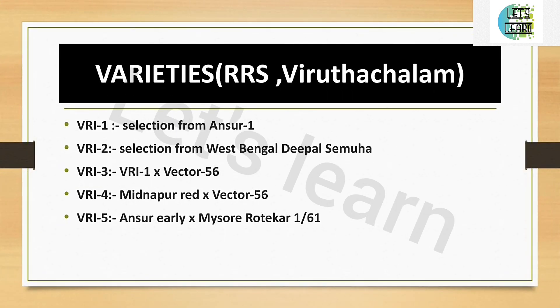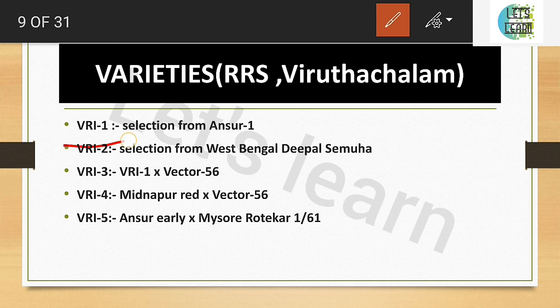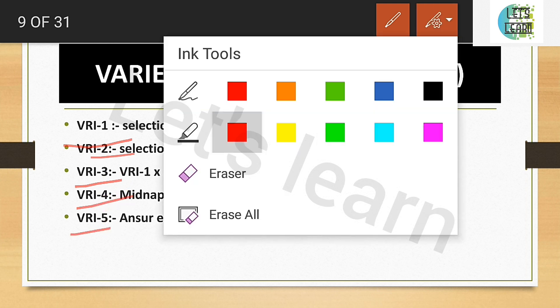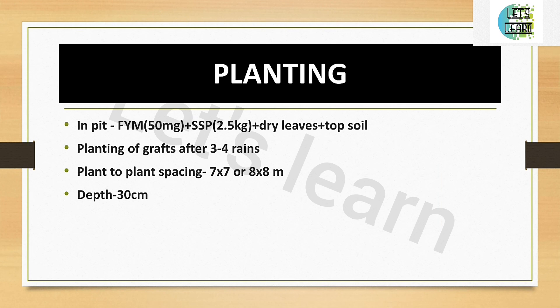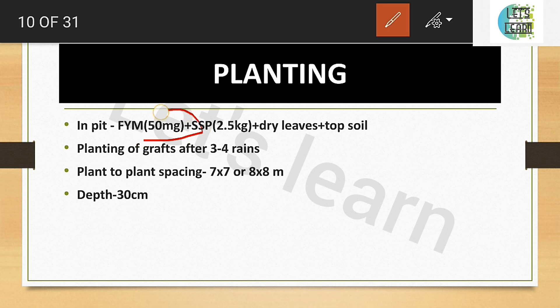For varieties of cashew, many varieties are released from Vridhachalam — VR1, VR2, VR3, VR4, VR5, and others. For the planting method, in the pit apply 50 kg of FYM (farm yard manure) and single super phosphate (SSP) at 2.5 kg, plus dry leaf and topsoil. After filling the pit, the cashew seedling can be planted for good growth.